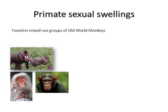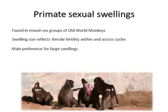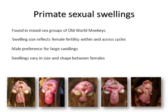The swelling size reflects female fertility within an anestrus cycle, which means that if a female is not sexually receptive she has no swelling, but swelling size gradually increases towards her ovulation until being maximal when the probability of ovulation is highest. There is a male preference for large swellings, which makes sense — if males choose females with bigger swellings they will pick females that are more fertile and closer to ovulation. The size and shape of sexual swellings at their maximal size, just around ovulation, can vary quite extensively between females.